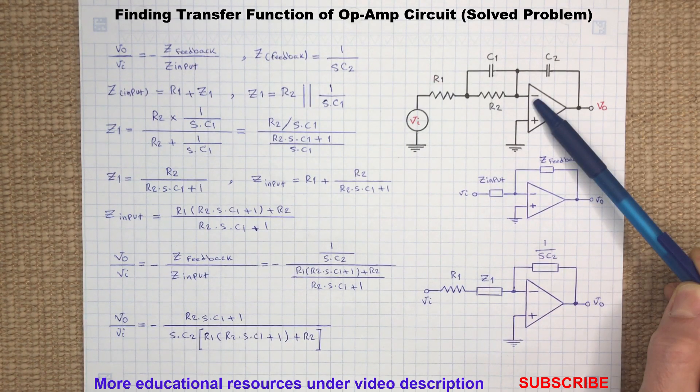This is an inverting configuration circuit because the input signal VI is applied to the inverting terminal V minus through the R1, R2, and C1.